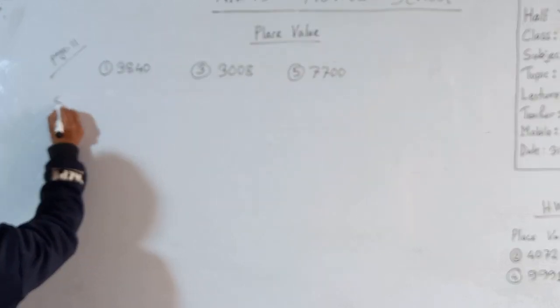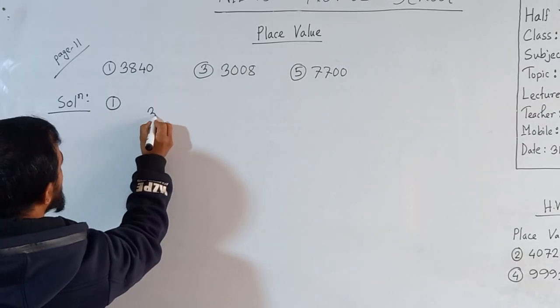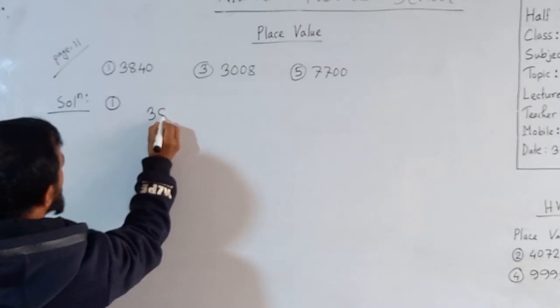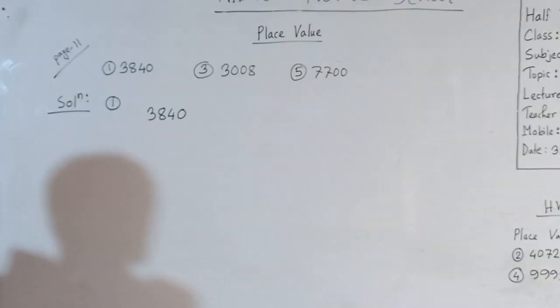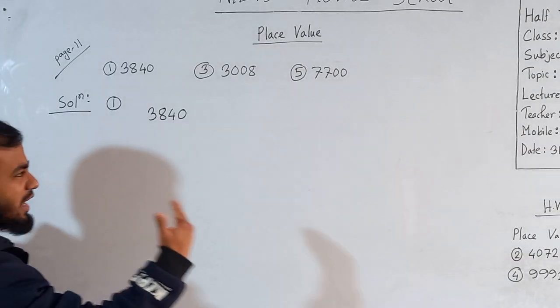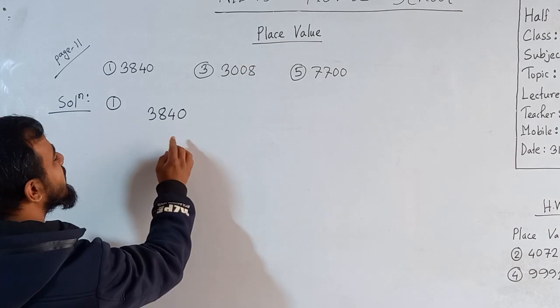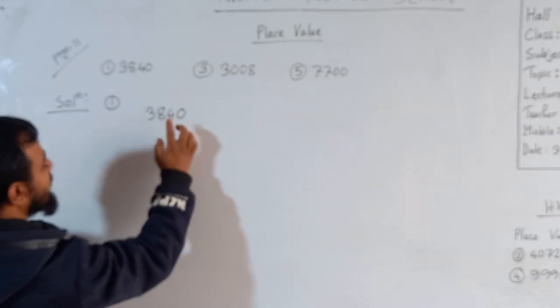Now, first of all, number 1. Solution of 1: the given number is 3840. We know that place values start from the right side. The first digit from the right side will be the 1's place, then the 10's place, then the 100's place, and after that the 1000's place.